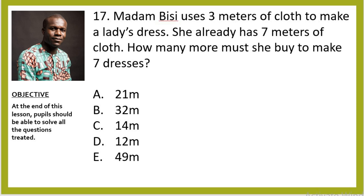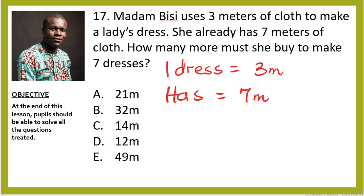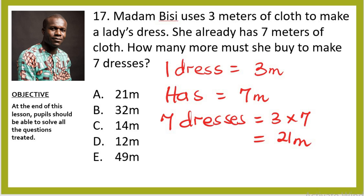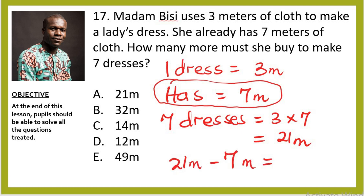Question 17: Madam BC uses 3 metres of cloth to make a lady's dress. She already has 7 metres. How many more must she buy to make 7 dresses? To make 7 dresses she needs 3 × 7 = 21 metres. She has 7 metres, so she must buy 21 − 7 = 14 metres more.